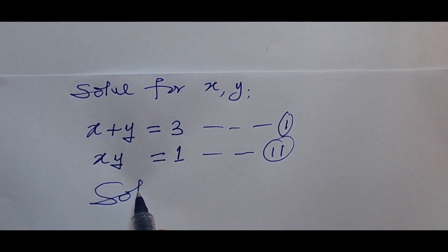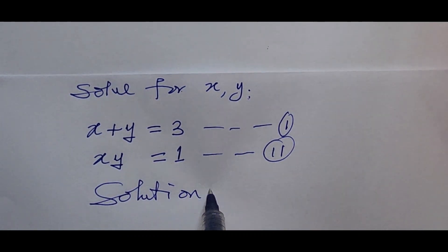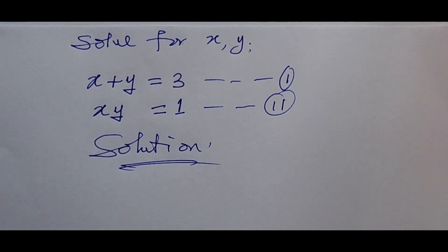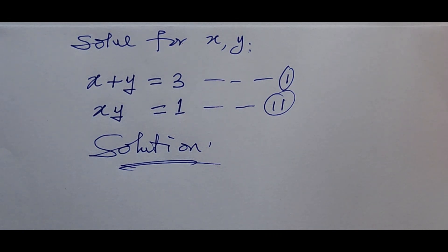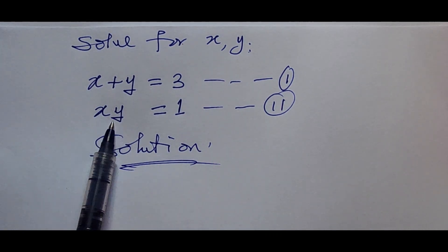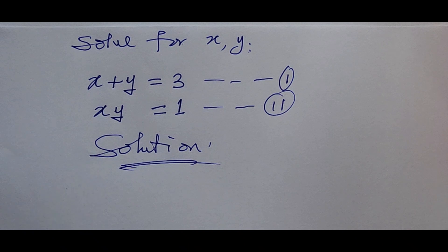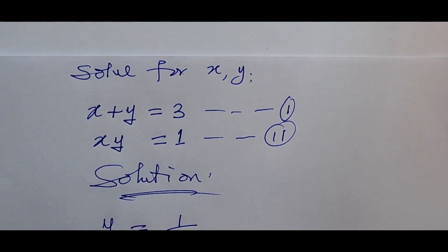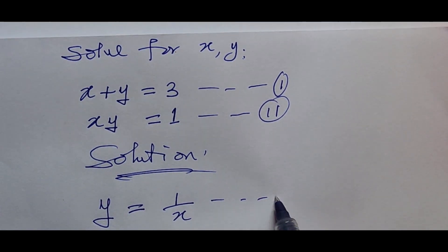We take our solution. Now I'm going to take my theory from equation two. From equation two, I want to make y the subject of the formula. Making y the subject of the formula from here, this is going to give us y equals one over x. So let's call this equation three.